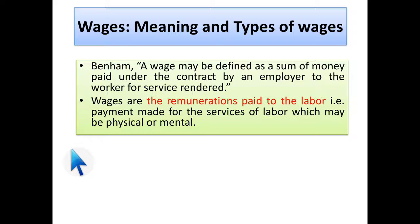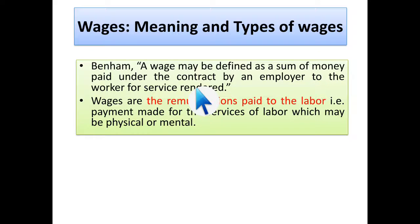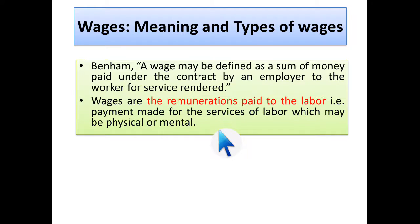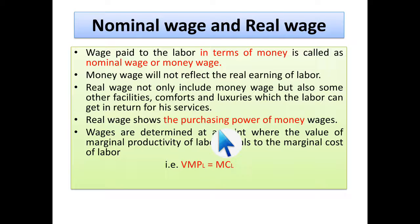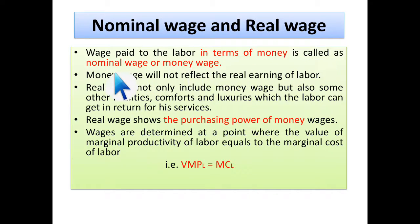Coming to wages. According to Benham, a wage may be defined as a sum of money paid under contract by an employer to a worker for services rendered. Wages are the remuneration paid to labor — payment made for the services of labor, which may be physical or mental. There are two types of wages: nominal wage and real wage. Wages paid to labor in terms of money is called nominal wage or money wage. For example, if you give a labor 220 rupees today, that is nominal wage.